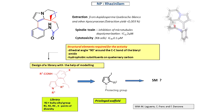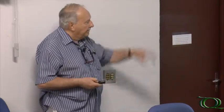First we had to design a library of possible analogues with the help of modeling. We did that — I won't talk to you about the modeling, but we came to the following proposal.